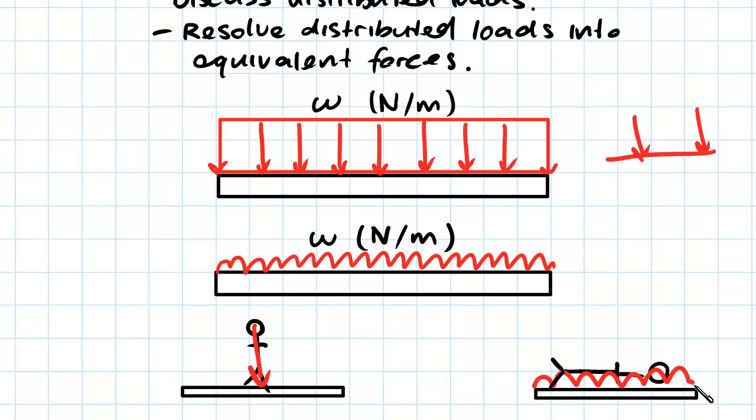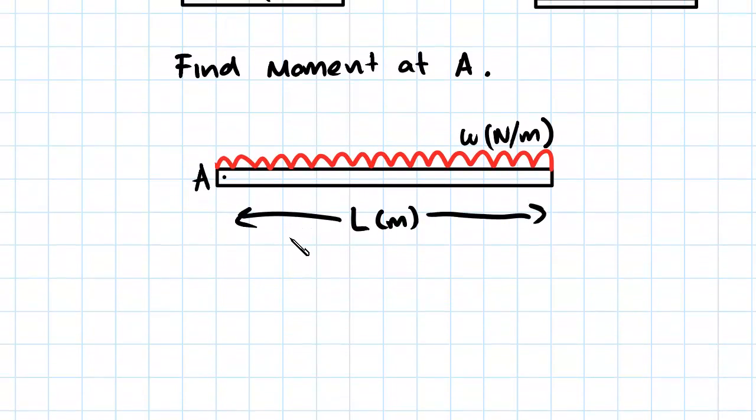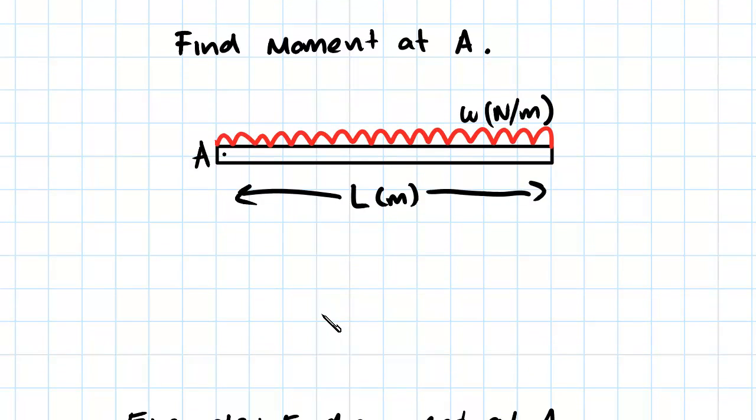Okay, now we'll just have a go at looking at an example. So we've been asked to find moment at A. A is this point here. We have a beam that is L meters long, and we have a UDL which is given to us in the units of nu.